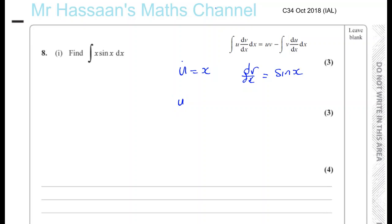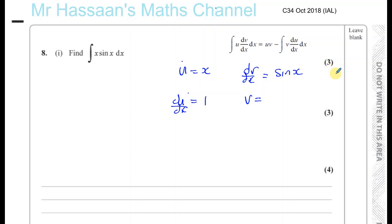I'll differentiate u underneath. So du/dx is equal to 1. For v, we need to integrate dv/dx, which is sine x. The differential of cosine x is minus sine x, which means the integral of sine x is minus cosine x — they are the reverse of each other.